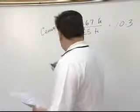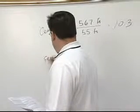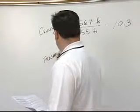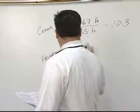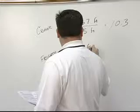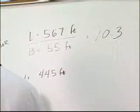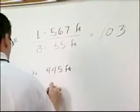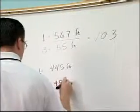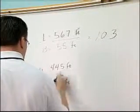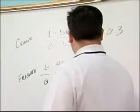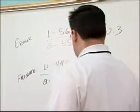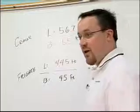I have statistics for a frigate. Its length is 445 feet, its beam is 45 feet. So its length to beam ratio is 9.9. These are relatively fast vessels.